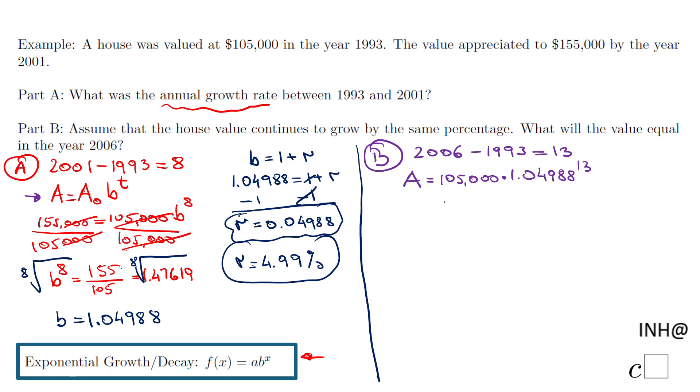Now the calculator is useful. I'll raise this number to the 13th power and multiply by 105,000. I end up with $197,717.167—I'll copy a few more digits just in case.